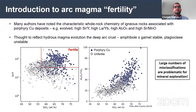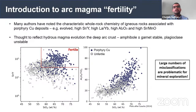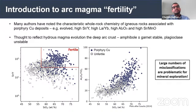I'm going to be talking about work I've done in my PhD, using machine learning algorithms to classify porphyry copper fertility in arc magmas. It's been noted by many people that magmas associated with porphyry copper deposits have characteristic whole-rock geochemistry, such as a high strontium/yttrium ratio or a high lanthanum/ytterbium ratio. This is interpreted to reflect hydrous magma evolution at high pressures in the deep crust, stabilising amphibole and garnet and suppressing plagioclase. Porphyry copper rocks have a higher strontium/yttrium ratio and higher aluminium/titanium ratio relative to unfertile igneous rocks.